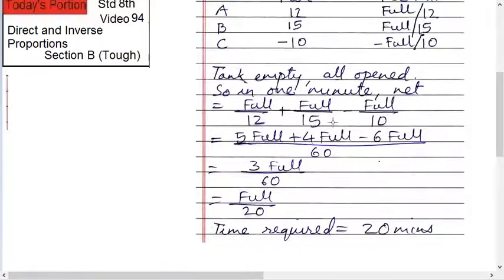So find LCM. 12, 15 and 10. 60. Together we are finding it. So just adjust this 12, 5 full. You can take this full as X also. So 5 full plus 4 full minus 6 full.